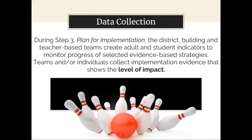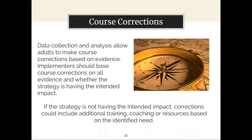During step three, the district, building, and teacher-based teams created adult and student indicators to monitor progress of selected evidence-based strategies. Teams and individuals collected implementation evidence that shows the level of impact. Data collection and analysis allows adults to make course corrections based on evidence. Implementers should base course corrections on all evidence and whether the strategy is having the intended impact. If the strategy is not having the intended impact, corrections could include additional training, coaching, or resources based on the identified need. Note that these corrections include changing the actions of the adults—your cause data.